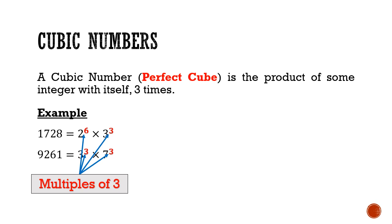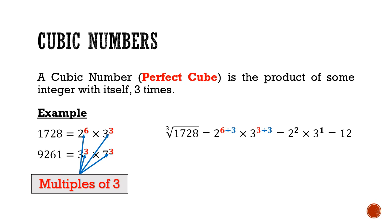When cube rooted, these numbers give a nice whole number. Let's take the cube root of 1728. We divide the indices by 3, giving us 2 squared times 3 to the power of 1, which is 12. Similarly, for the cube root of 9261, dividing both indices by 3 gives 3 times 7, which is 21.